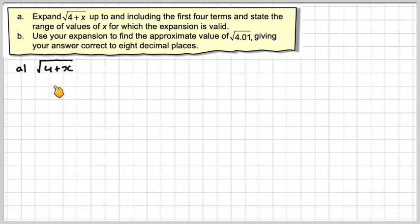So we've got square root of 4 plus x, which we can write as 4 plus x to the half. We need this to be 1 plus x, so we need to take out the square root of 4 or 4 to the half. If we do that, then we need to put a 4 here.